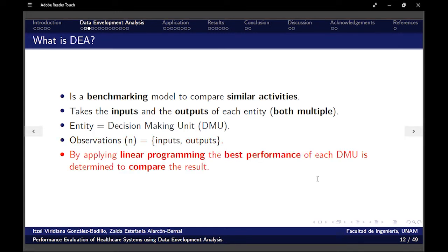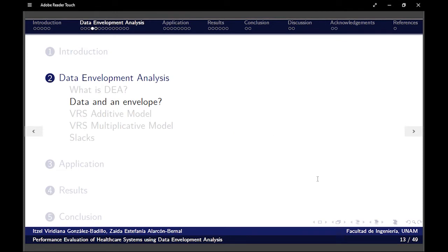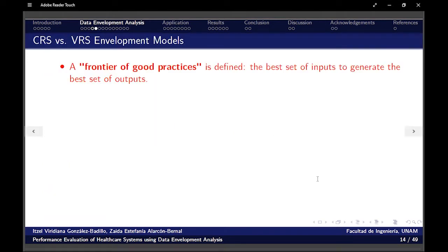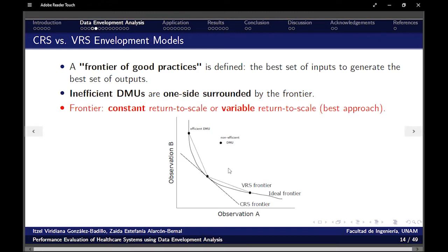Now, by applying linear programming, the best performance possible of each DMU is going to be determined and compared. How about the data envelopment? First of all, a frontier of good practices will be defined empirically. The best set of inputs to generate the best set of outputs. And in a way that inefficient DMUs will be surrounded by one side by the frontier. Here the frontier could be, well, first, let's imagine that that frontier ideally will be this curve.